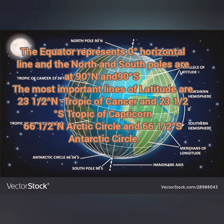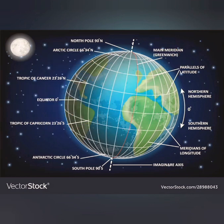The equator is represented by 0 degrees. There are other important lines of latitudes: 23.5 degrees north is the Tropic of Cancer, 23.5 degrees south is the Tropic of Capricorn, 66.5 degrees north is the Arctic Circle, and 66.5 degrees south is the Antarctic Circle. As we travel from the equator towards the poles, the temperature keeps on decreasing.